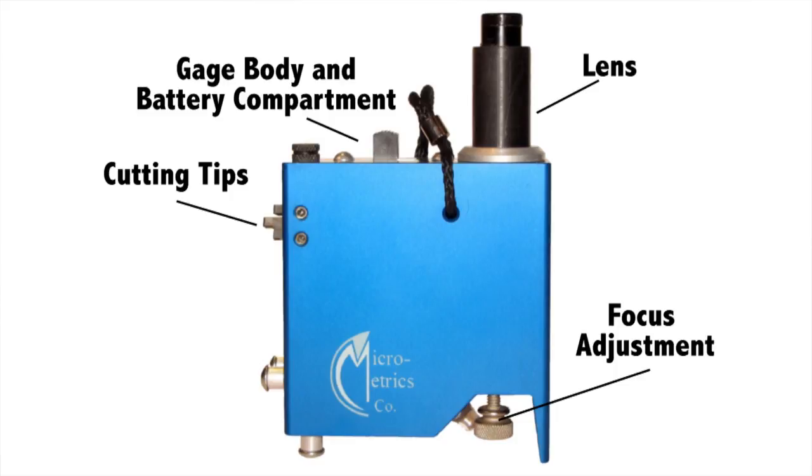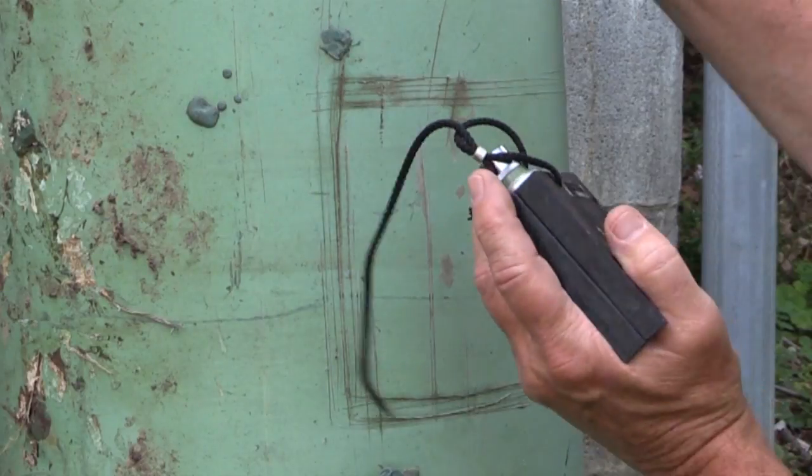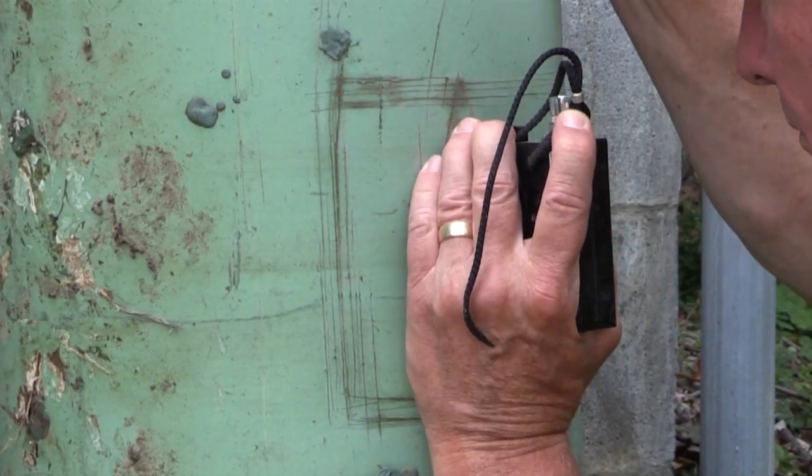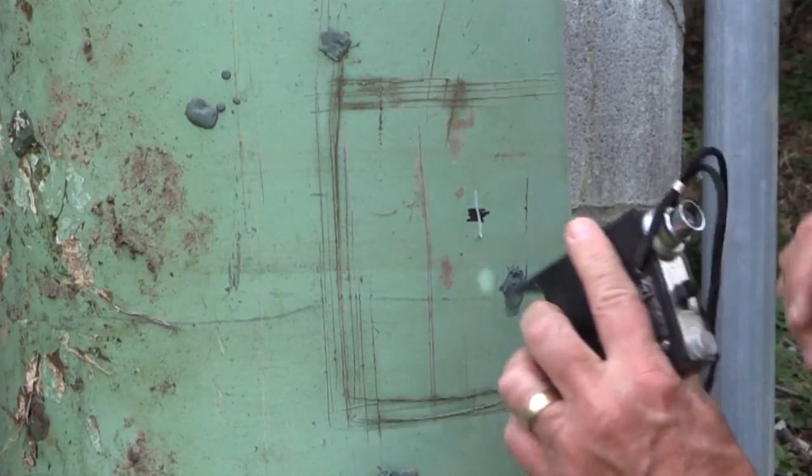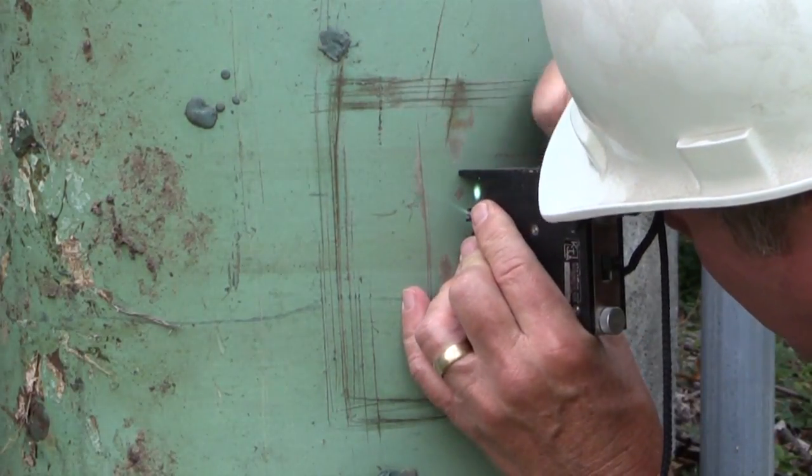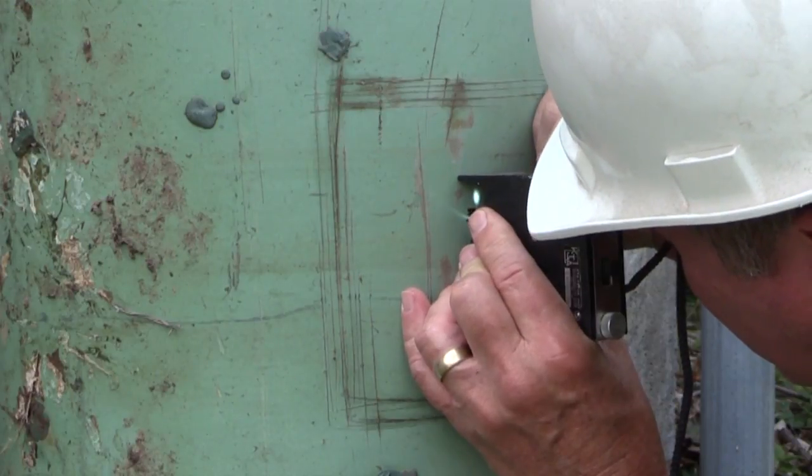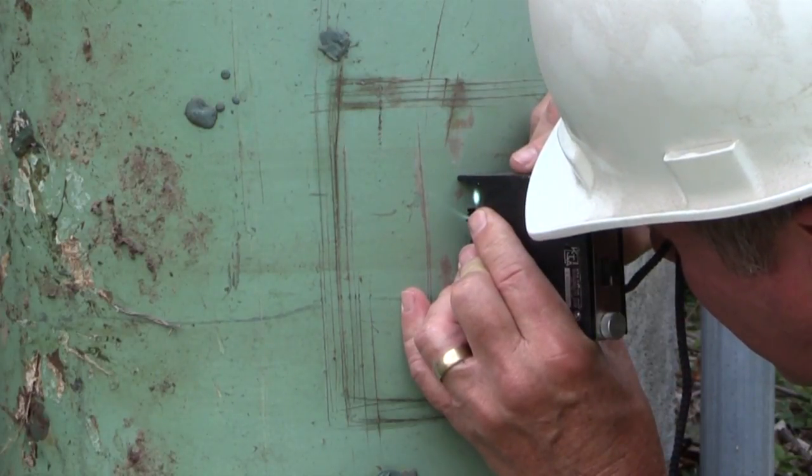There are three tungsten carbide precision cutting tips with the instrument. It's a destructive tool that makes an incision or groove about the width of a pencil line through the coating film down to the substrate. You measure that groove with the microscope up to 50 mils in thickness.